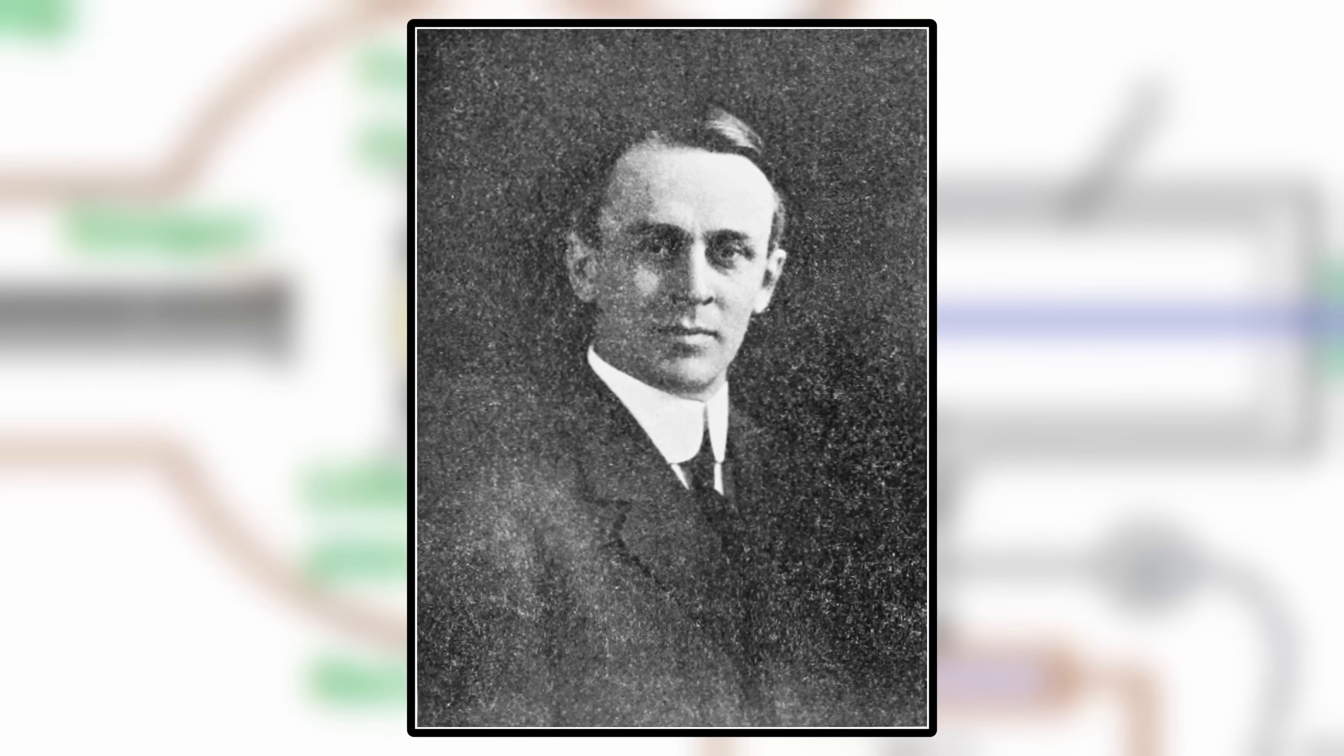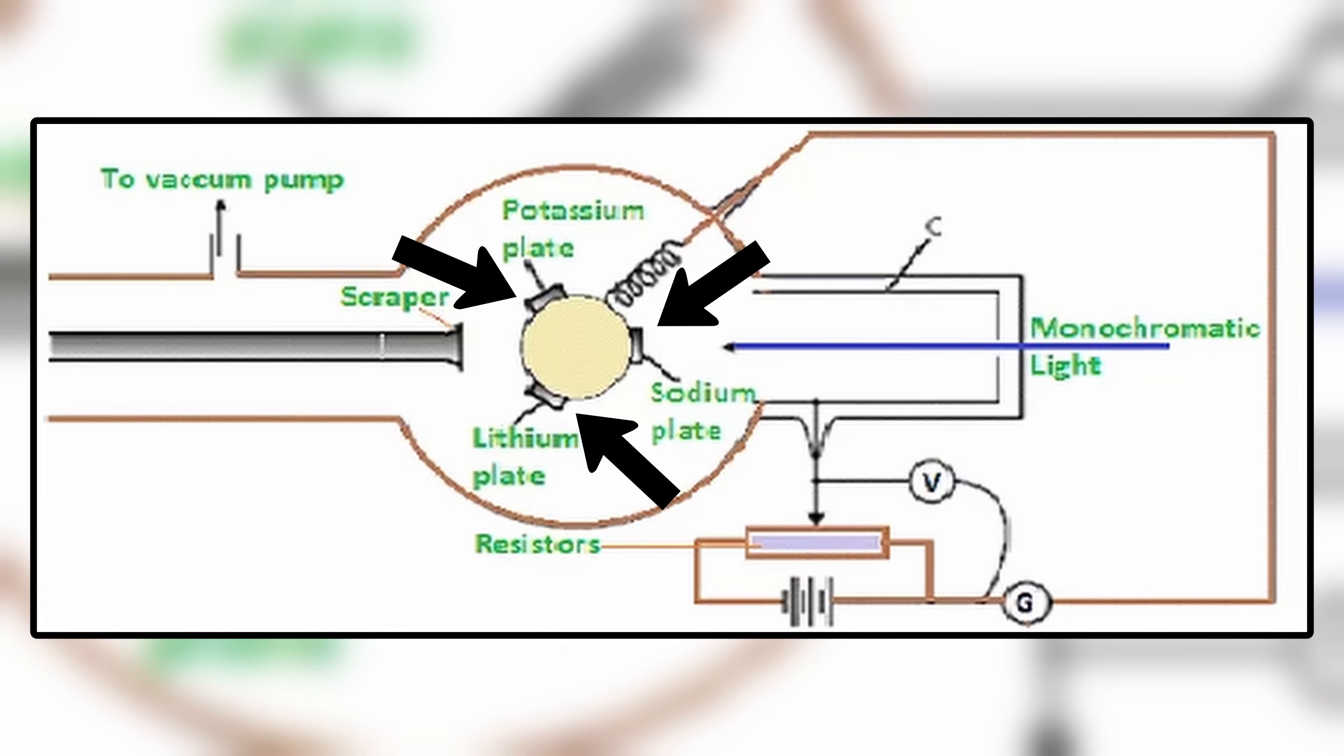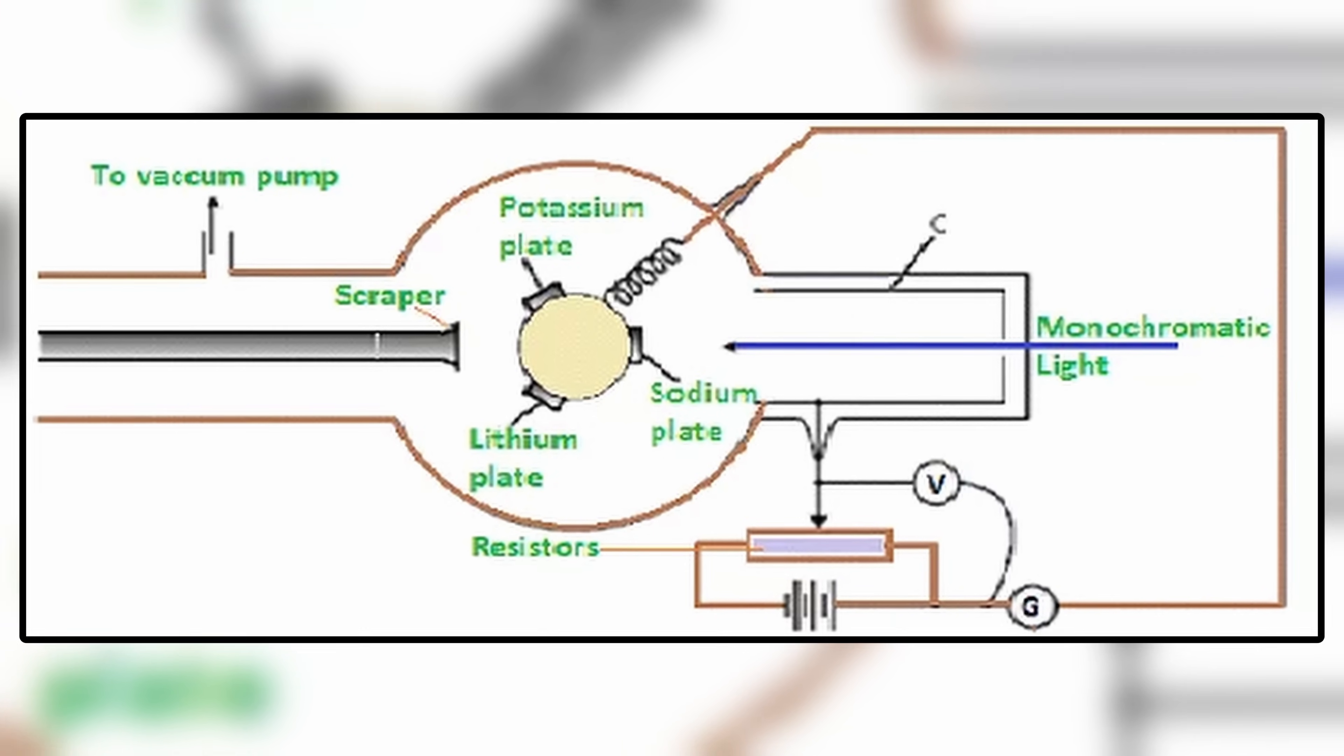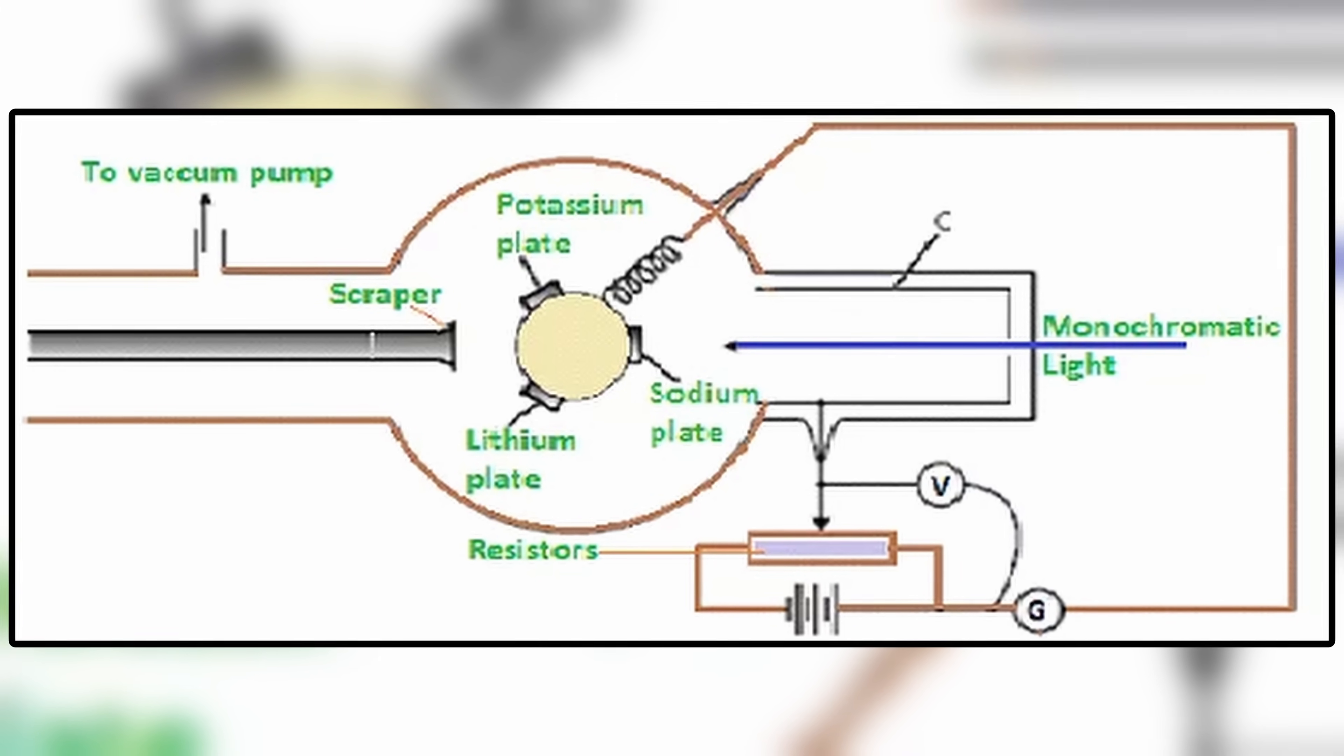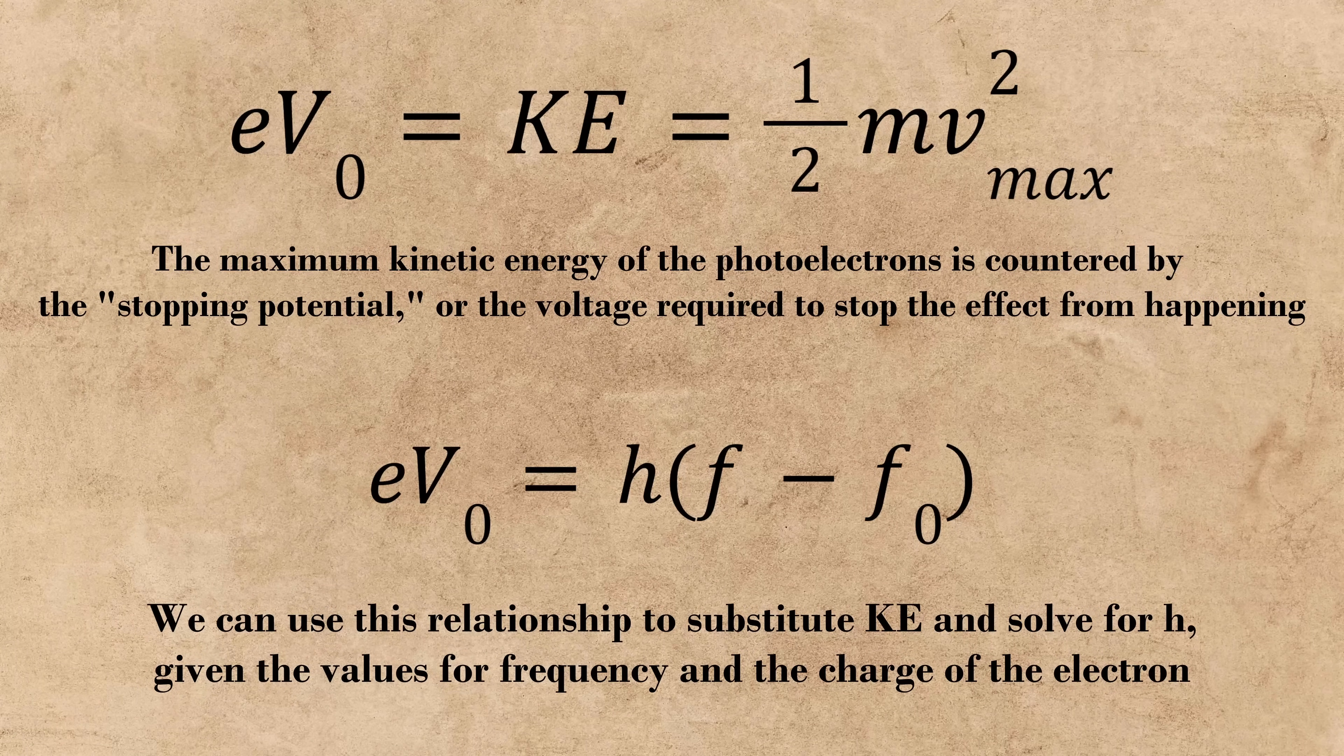Millikan, in his quest, unexpectedly proved Einstein and others further correct through his ingenious setup which involved a rotating plane of three different metals in a near-perfect vacuum chamber. A blade would constantly clean the metals as they rotated, and the metals would take turns being exposed to UV light. Upon seeing that the photoelectric effect still occurred in his setup, he used a previously established relationship by Lenard, Einstein's equations, and his previously calculated charge of the electron to solve for Planck's constant.